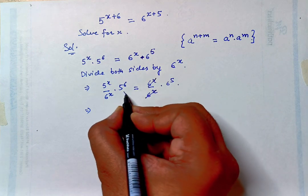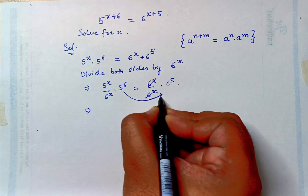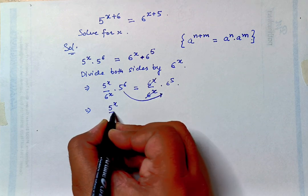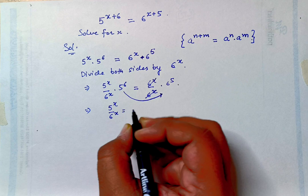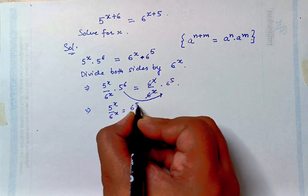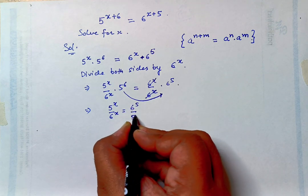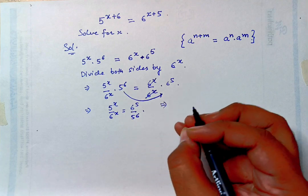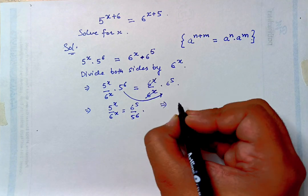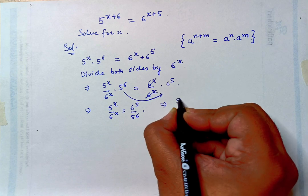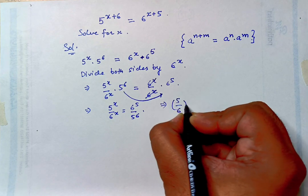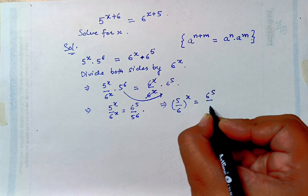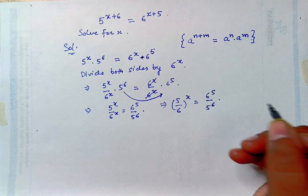Now we can shift 5 raised to power 6 to the other side. We get 5 raised to power x upon 6 raised to power x is equal to 6 raised to power 5 upon 5 raised to power 6. Or we can write it as 5 upon 6, raised to power x, is equal to 6 raised to power 5 upon 5 raised to power 6.